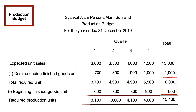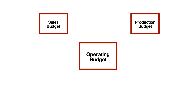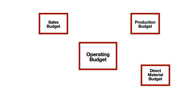So, this is your production budget. You have already completed the production budget. Now, moving to the direct material budget. See you in the next video. Bye-bye.